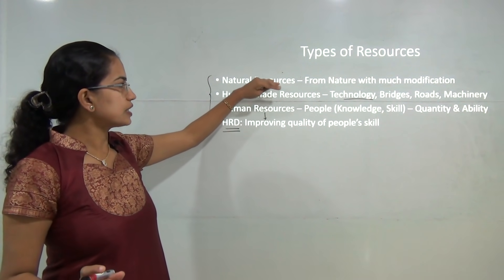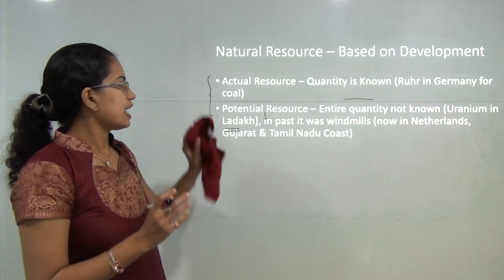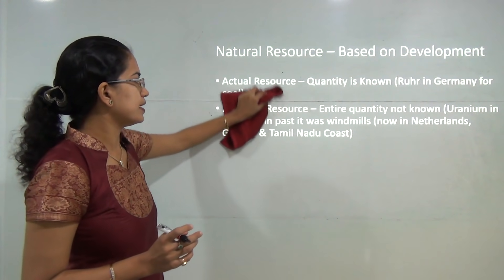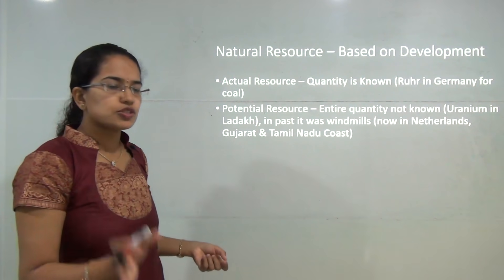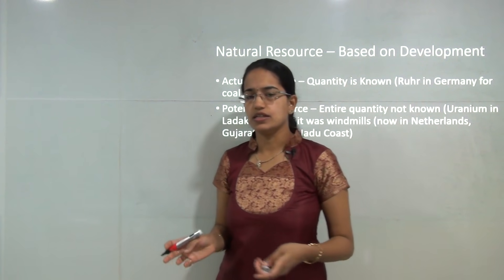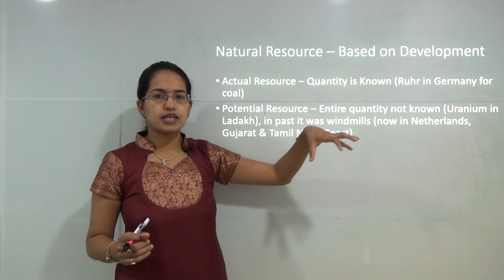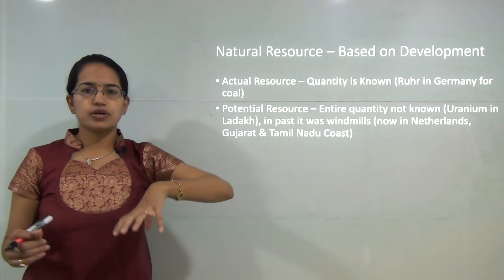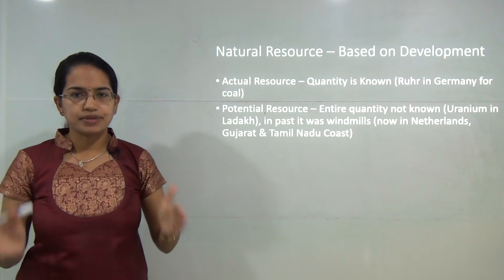Now let's move on to a detailed classification for natural resources. Natural resources can be classified based on various aspects. Based on development, there can be actual resources or potential resources. Actual resources are those which are actually present on the earth — for example, availability of coal in Germany and availability of iron ore in Kudremukh in India. All these are actual resources which are known and present.